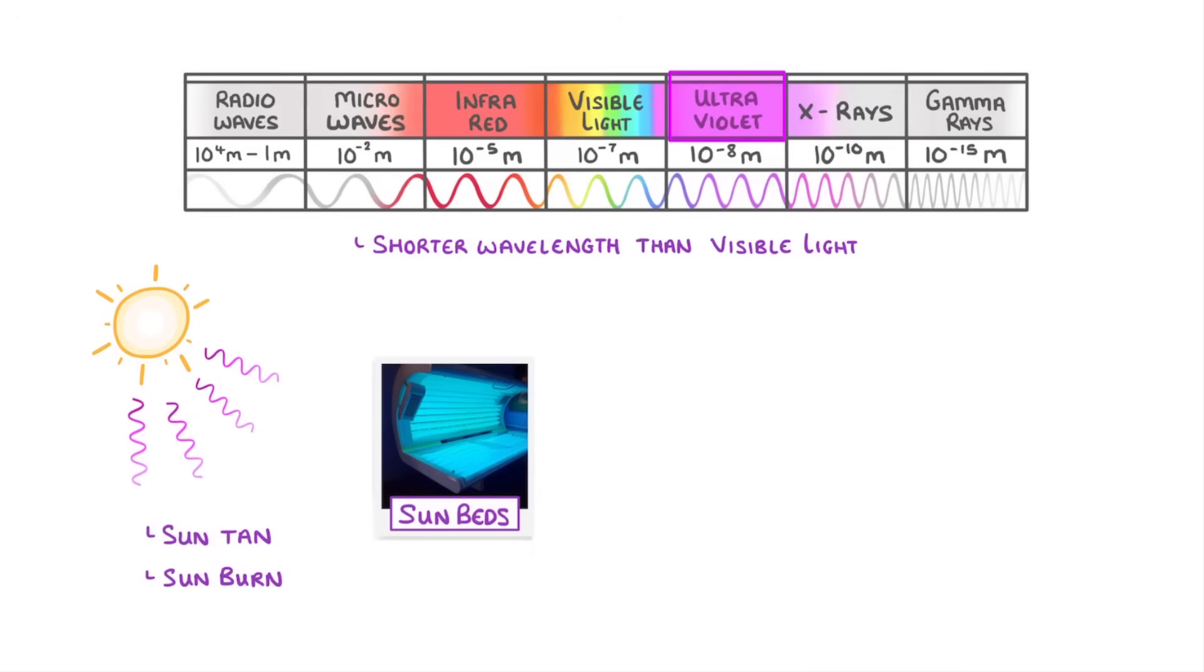Now one of the more tricky concepts in this topic is the idea of fluorescence. This is a property of certain chemicals where ultraviolet light is absorbed and then the energy is re-emitted as visible light.